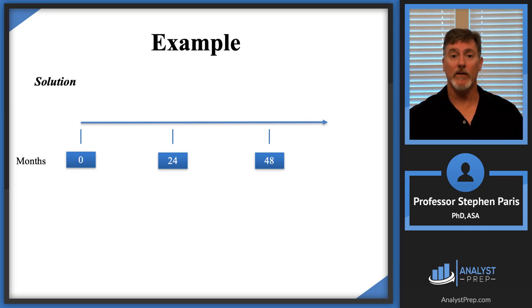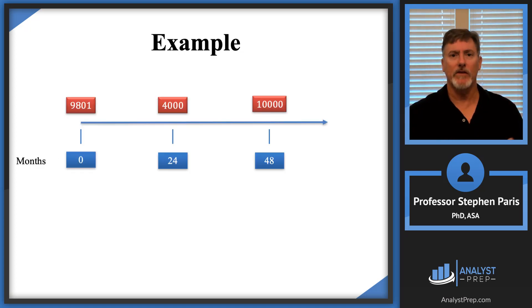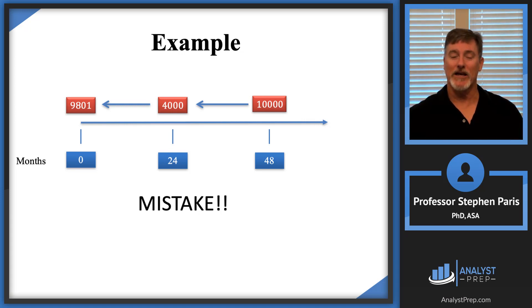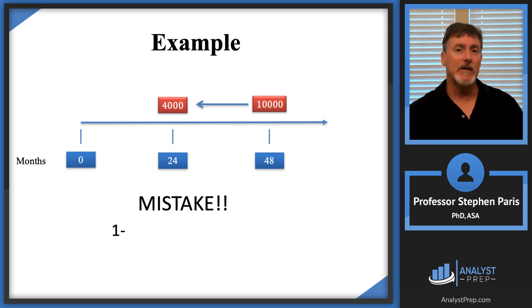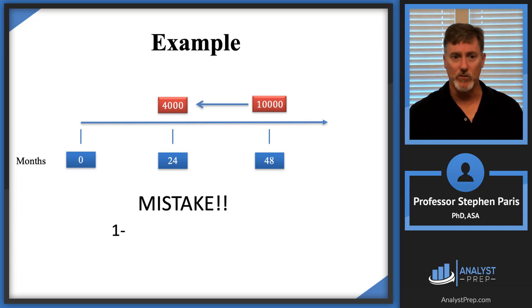Going back to the problem: I have 4,000 at time 24 and 10,000 at time 48. A common timeline students make looks like this — they put 9801 above time zero, 4,000 above time 24, and 10,000 above time 48, then draw arrows connecting them. I'm suggesting: don't do that — that's a mistake. When I see an arrow from 10,000 back to 4,000, it looks like the 10,000 is being discounted to a value of 4,000, which is completely wrong. The 4,000 and 10,000 are separate, independent payments.